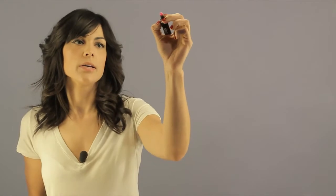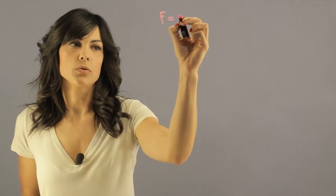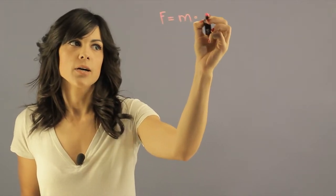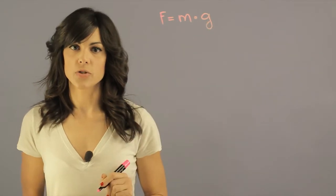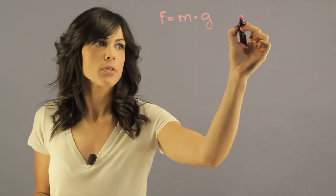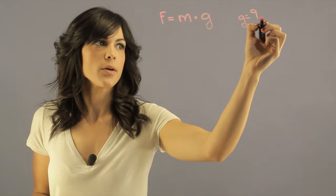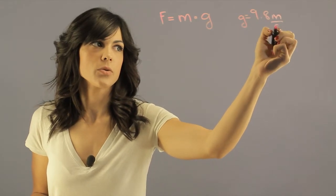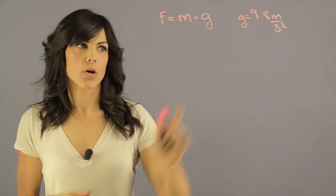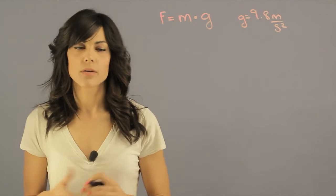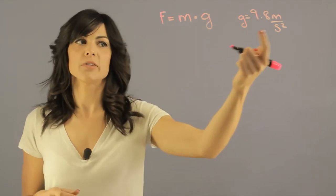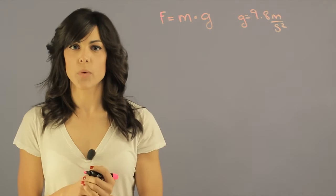A really famous equation - the way we calculate weight, is generally the force equals the mass times the gravitational constant g. Now g on Earth is 9.8 meters per second squared, and that's our gravitational strength. We take the mass of an object, multiply by gravitational strength, and it gives us the weight.